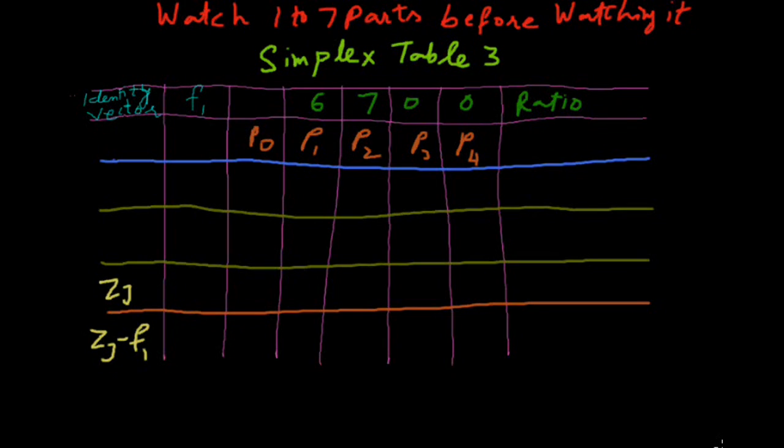This is the last simplex table, because in this table our ZJ minus F1 will become positive and we will calculate the value of X1 and X2 in this table.